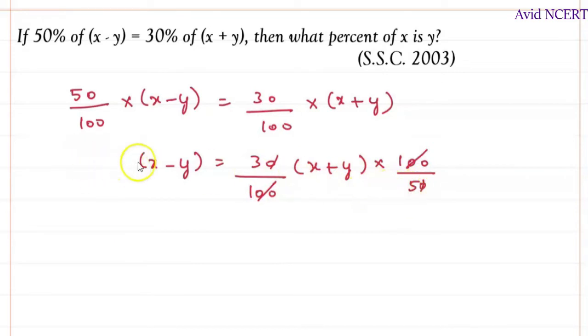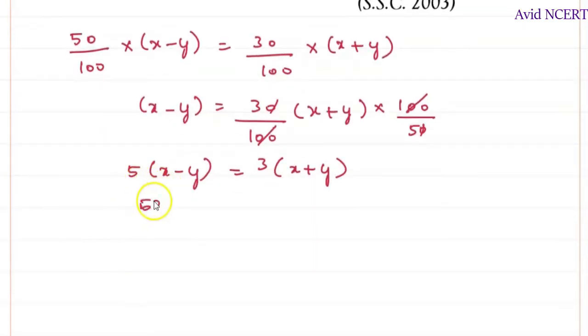So we can take this 5 to this side, which is 5 times x minus y equals 3 times x plus y. So we are finding x and y here.